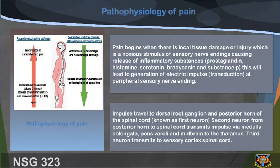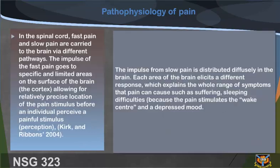The second neuron, from the posterior horn of the spinal cord, transmits the impulse via the medulla oblongata, pons, and midbrain to the thalamus. The third neuron transmits to the sensory cortex. In the spinal cord, fast pain and slow pain are carried to the brain via the front pathways. The impulse of fast pain goes to specific and limited areas on the surface of the brain, allowing relatively precise location of the pain stimulus before an individual perceives a painful stimulus.